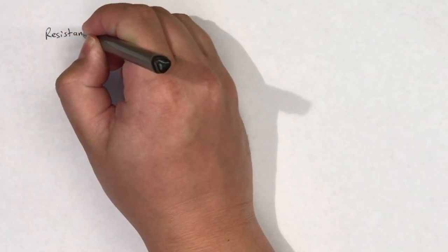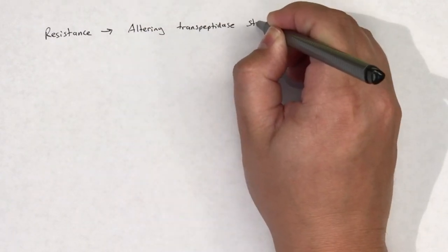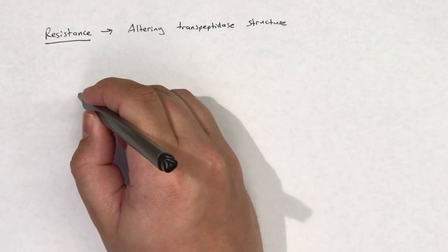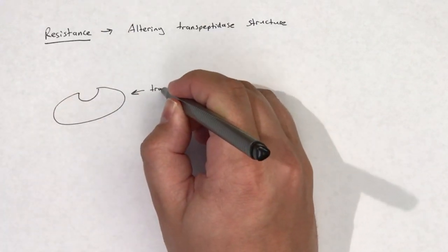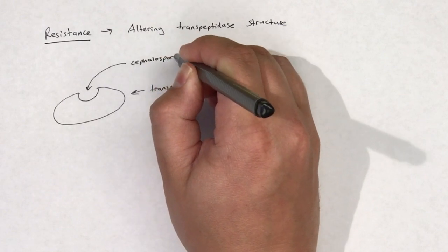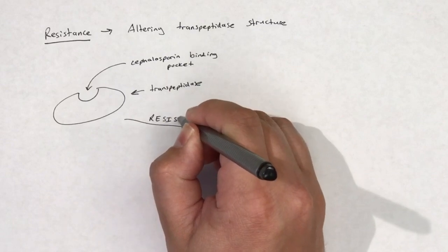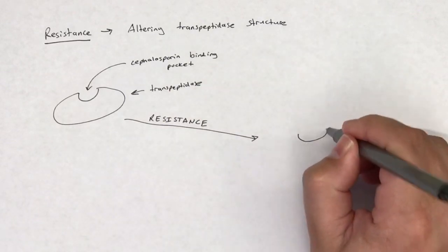The structure of transpeptidase is also an important factor in cephalosporins eliciting an effective inhibition of cell wall synthesis. Some bacteria are able to generate resistance to cephalosporins by altering cephalosporin binding to transpeptidase. This usually occurs due to point mutations that occur in the cephalosporin binding pocket.